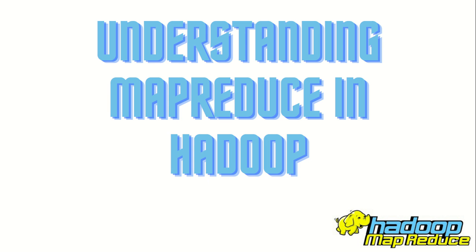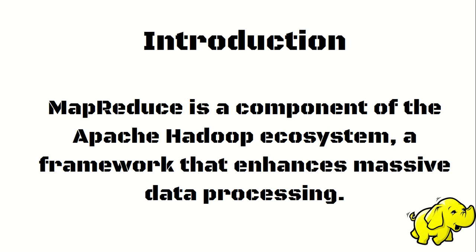Hello everyone, this is Amrit Pal Singh, welcome to the next video of Apache Hadoop. In this video I'll be talking about MapReduce. MapReduce is an integral component of the Apache Hadoop ecosystem — it is the algorithm working behind the scenes of Apache Hadoop. It was developed by Google back in 2004, when they published a research paper, which led to the evolution of Apache Hadoop and MapReduce. Hadoop is a framework which enables massive data processing.